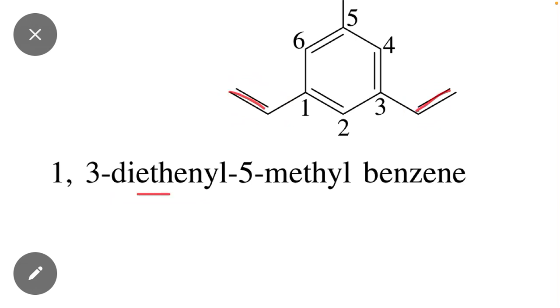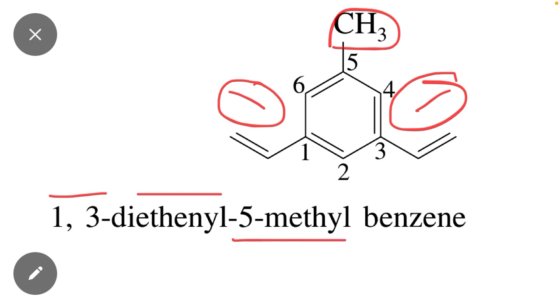So the position of the first substituent is one and comma three, one comma three diethenyl. And position number five contains a methyl group, so five-methyl. And the remaining molecule is called benzene ring, so the full name of this compound will be...